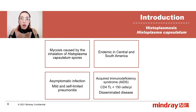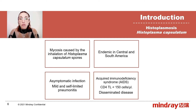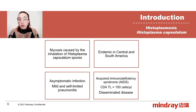Even though adrenal insufficiency caused by Histoplasma capsulatum is not a frequent infection, immunocompromised patients, mainly those with compromised cellular immunity, are more susceptible to developing this kind of infection, which has a severe impact on their health and also means a life risk when this infection is not treated or is treated improperly.